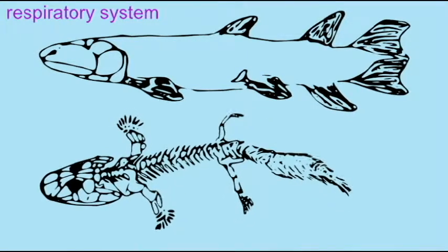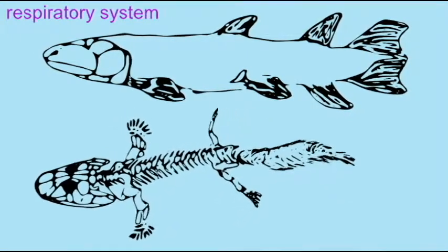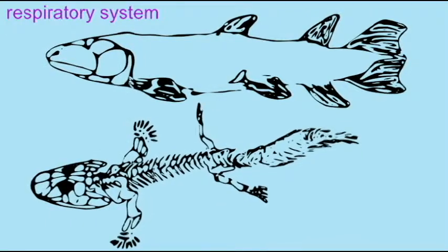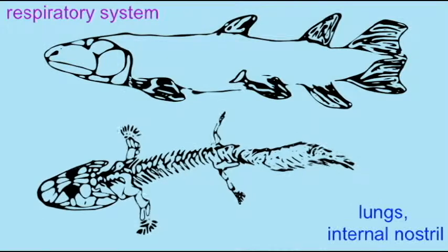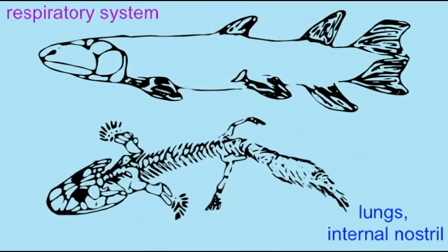Modern tetrapods utilize lungs to breathe oxygen from the air while on land. These lungs, however, had evolved in Sarcopterygian fish prior to the evolution of the first tetrapods.